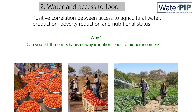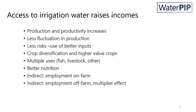There is a positive correlation between access to agricultural water, food production, poverty reduction, and nutritional status. Access to irrigation raises income because it leads to higher production and also higher productivity. It leads to less fluctuation in production — a more stable production — hence less risk for farmers, and that means farmers are generally more inclined to use better inputs. Access to irrigation water also leads to crop diversification and the cultivation of higher value crops, and irrigation water is also used for multiple uses like fish, livestock, and others. It also leads to better nutrition because of the availability of a larger variety of food crops.